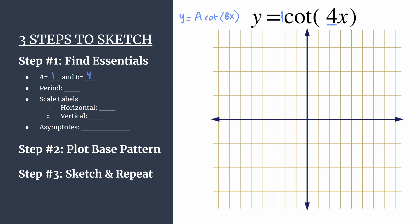b also helps us find the period. There's a quick little formula, pi over b for cotangent graphs. That'll help you find the period. So ours will be pi over four. Remember period's just the length of one horizontal cycle.